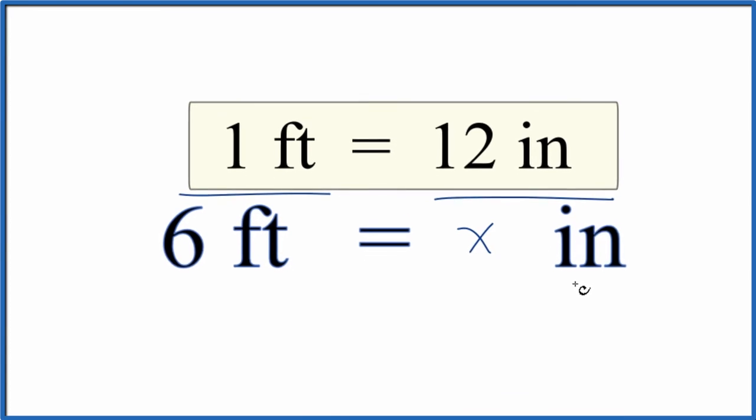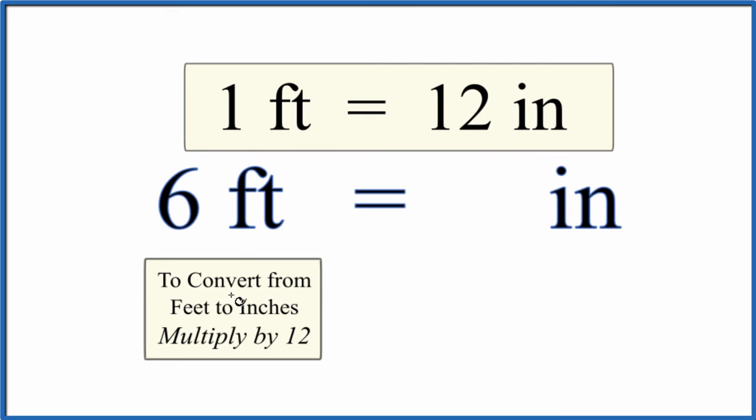Here's a way people often use to solve this problem as well. When you're converting from feet to inches, you can just multiply by 12. Six times 12, that equals 72. So six feet equals 72 inches.